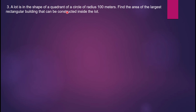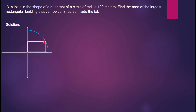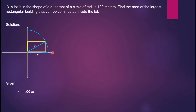For example three: a lot is in the shape of a quadrant of a circle of radius 100 meters. Find the area of the largest rectangular building that can be constructed inside the lot. We draw the quadrant in a Cartesian plane. The rectangle inside has sides x and y, and its diagonal equals the radius r.